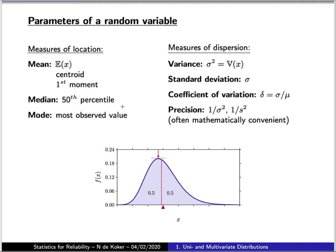A very common parameter characterizing a random variable is the mean, which is the expected value of that distribution. The mean gives you the centroid or first moment of area of the distribution function — effectively a balancing point such that the moments of area on either side are equal. Another measure of central location is the median, which is the value of the random variable associated with a 50% exceedance probability.